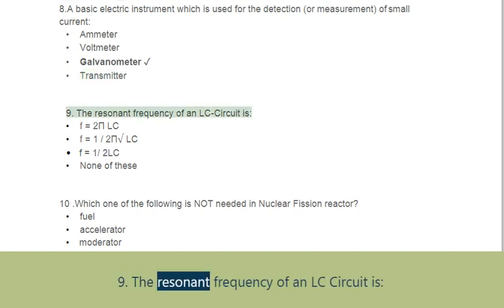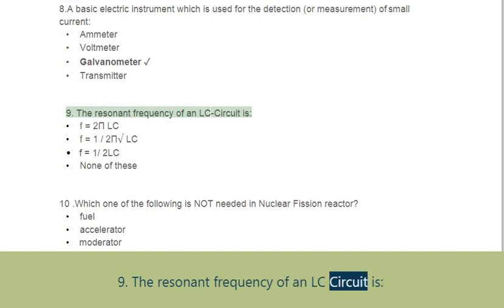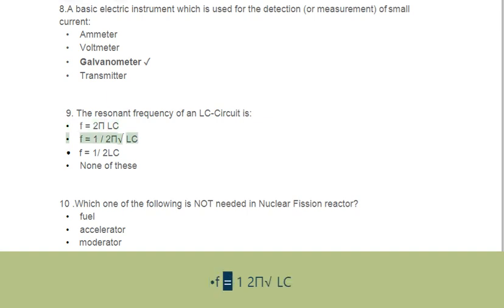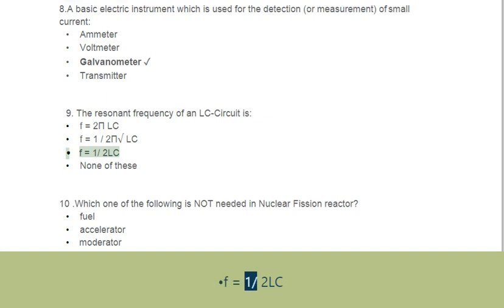Question 9: The resonant frequency of an LC circuit is. Options: A. f = 2LC, B. f = 1/2LC, C. f = 1/√(2LC), D. None of these.